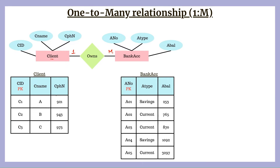Let's understand this with the help of the relational model. In the relational model we also have the client entity and the bank account entity, and we have created two tables for the same. Client ID is the primary key in the client table, wherein we have three clients: C1, C2, and C3. In the bank accounts table, account number is the primary key, wherein we have five accounts: A01, A02, A03, A04, and A05.